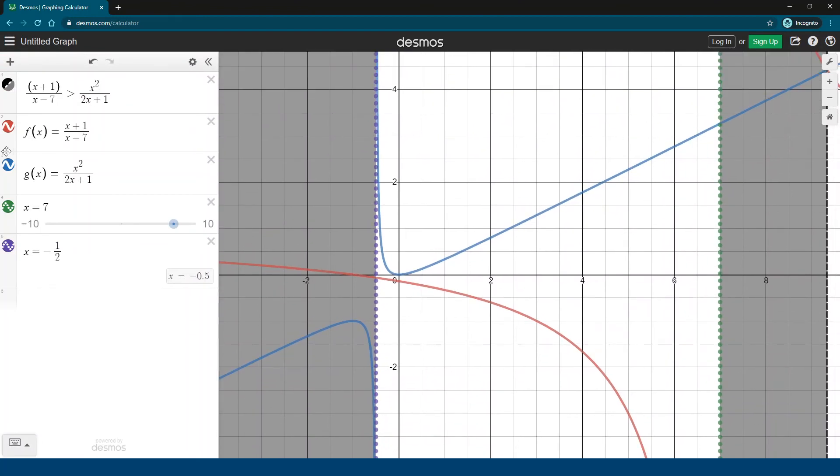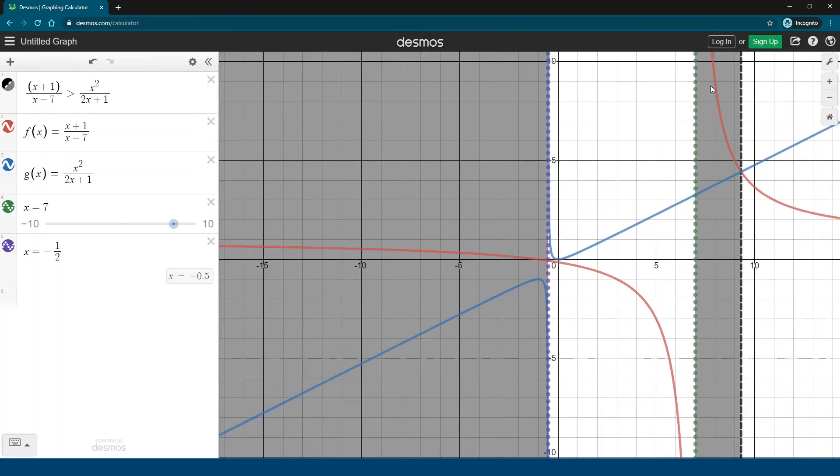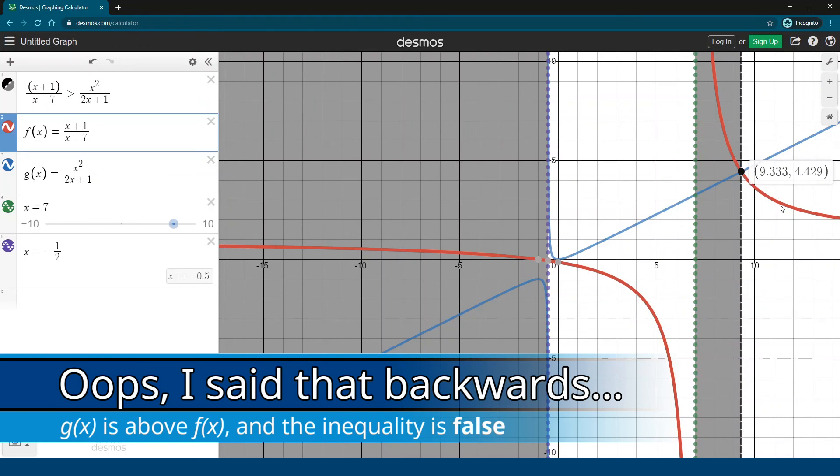Okay, now we're getting at why we have this inequality. So right there, where this curve, which is the g of x curve, meets this vertical asymptote, the one that came from f of x, that's where it crosses from being above to being below because, let me zoom out, you see f of x is up here in that region. Now there, at this unusual point, looks like about 9 and a third, that's where they cross each other. And now the f curve is above the g curve, and we have the inequality being true in that zone.